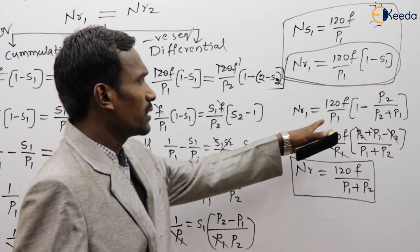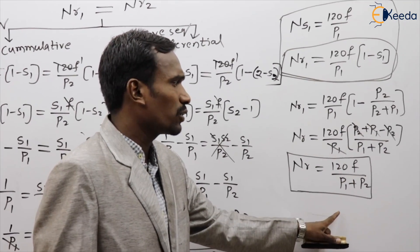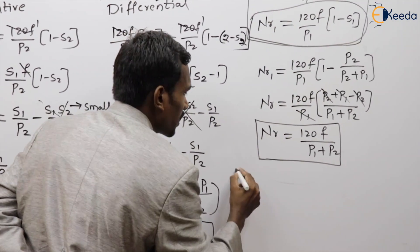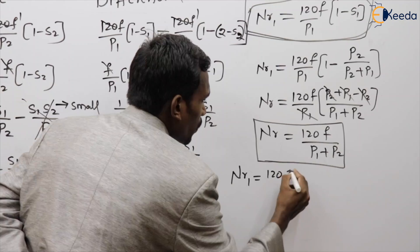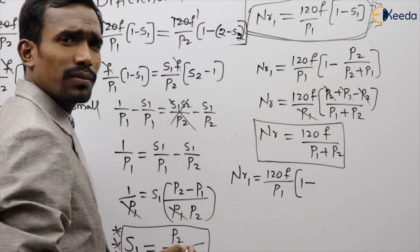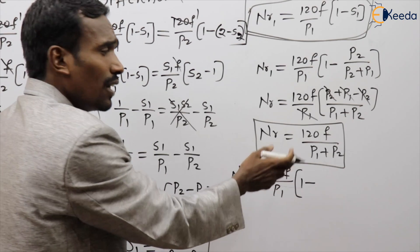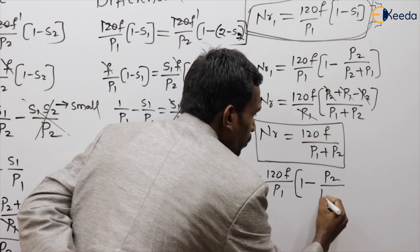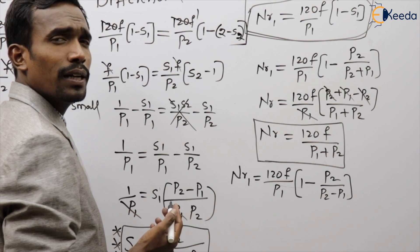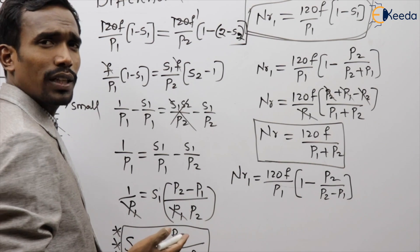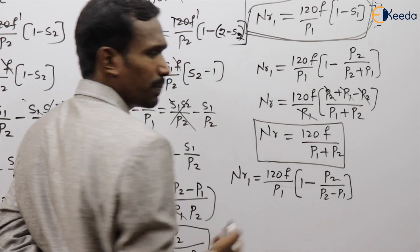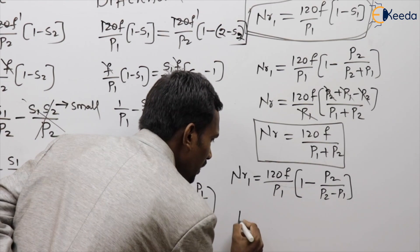For the differential connection, nr1 = 120F/P1 × (1 − S1), substituting S1 = P2/(P2−P1): P2 cancels and P1 cancels, giving the final rotor speed nr = 120F / (P1 − P2).